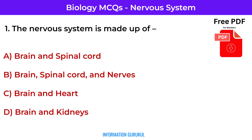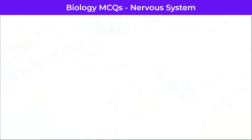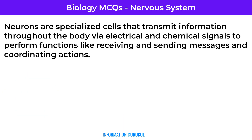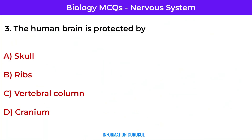Question number one: the nervous system is made up of brain, spinal cord, and nerves. Question number two: the structural and functional unit of the nervous system is the neuron. Neurons are specialized cells that transmit information throughout the body via electrical and chemical signals to perform functions like receiving and sending messages and coordinating actions.